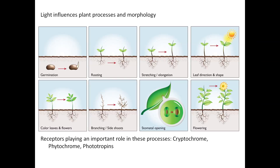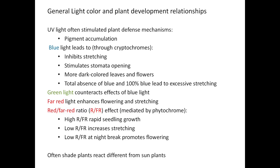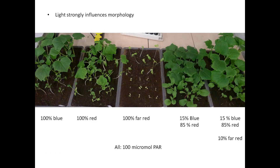Throughout the life cycle of a plant, light can have different effects on plant growth. From the moment of germination, light determines growth, the direction of growth, branching and flowering. These plant processes are mediated by a large number of so-called photoreceptors. UV light often triggers defense mechanisms in plants, leading to pigment accumulation and the build-up of tastes and aromas. Blue light inhibits stretching and stimulates stomatal opening, whereas green light counteracts such effects. Red light penetrates easily through leaves and hence increases when plants are overgrown — plants react to this by stretching their petioles and tending to flower earlier. The relative proportion between red and far-red light is also an important factor; high red to far-red ratios enhance seedling growth and stretching.